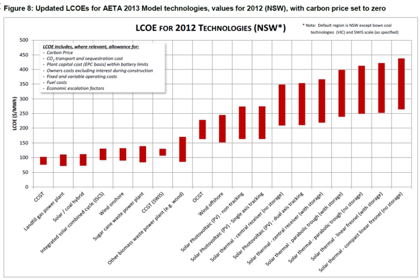Coal has the highest external cost in the EU, and global warming is the largest part of that cost. A means to address a part of the external costs of fossil fuel generation is carbon pricing — the method most favored by economics for reducing global warming emissions.